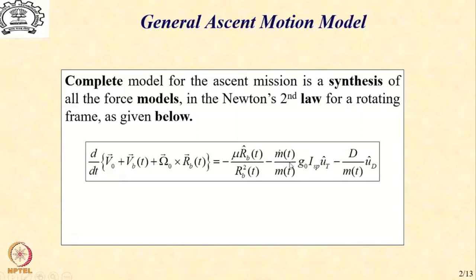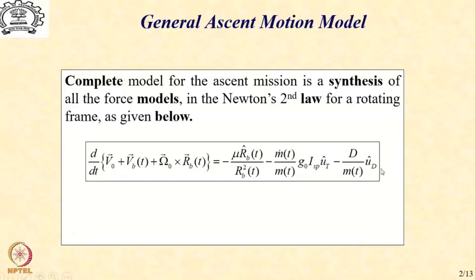Then we have the thrust expression, which is along the thrust direction — commonly the axis of the launch vehicle. And the last one is the drag term, which is along the drag direction, along the local velocity direction. As you can see, the vectors involved in this expression are all in different directions and will have to be described in a common coordinate system — Cartesian, polar, or any other — before we can proceed with the solution of this differential equation.